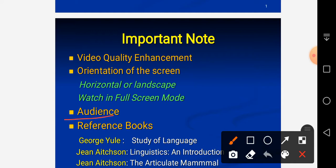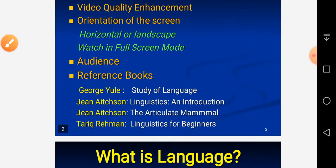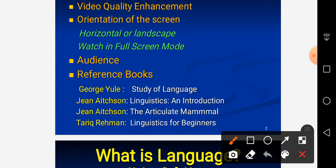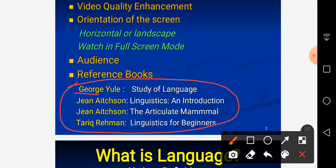The audience of this lecture is B.S. English third semester students studying Introduction to Linguistics at Government D.K. College Avalian. I usually consult four books to prepare my lectures: Yule's book Study of Language, already given in photocopied form to students; Jan Aitchison's book Linguistics: An Introduction and The Articulate Mammal; and Dr. Tariq Rahman's book Linguistics for Beginners.